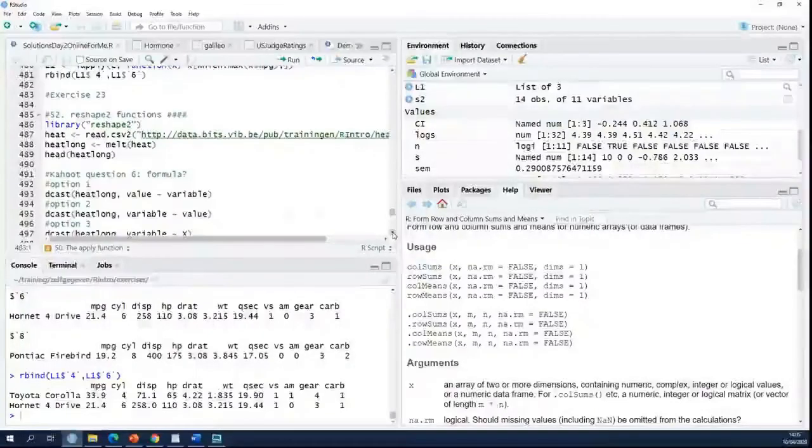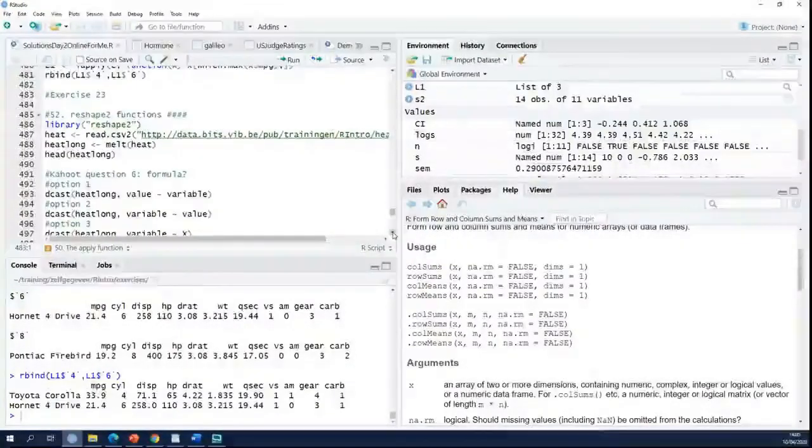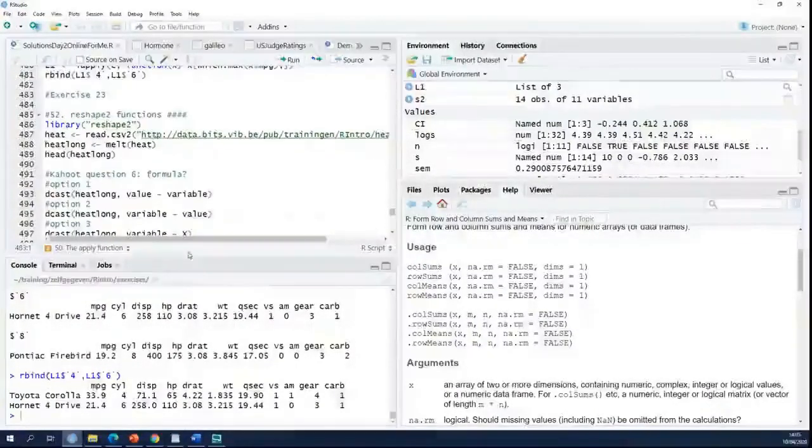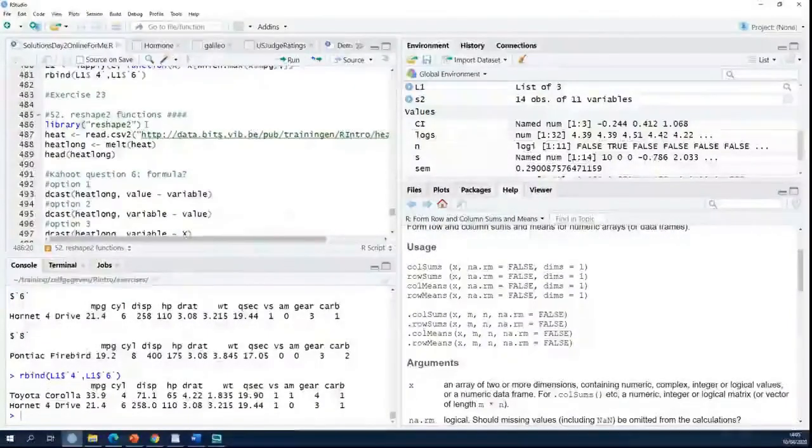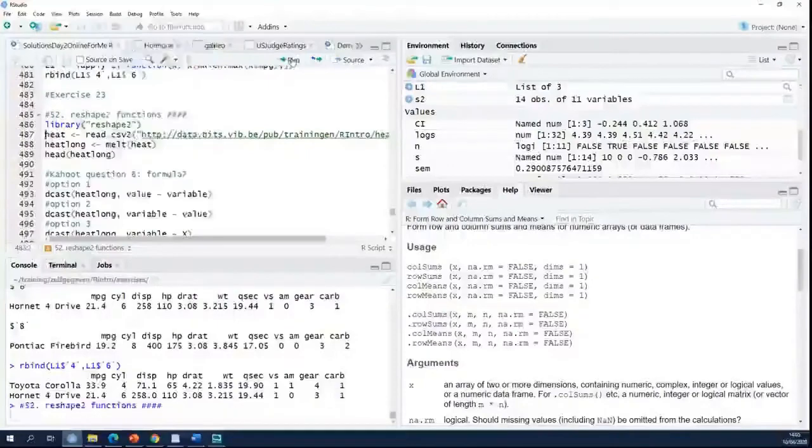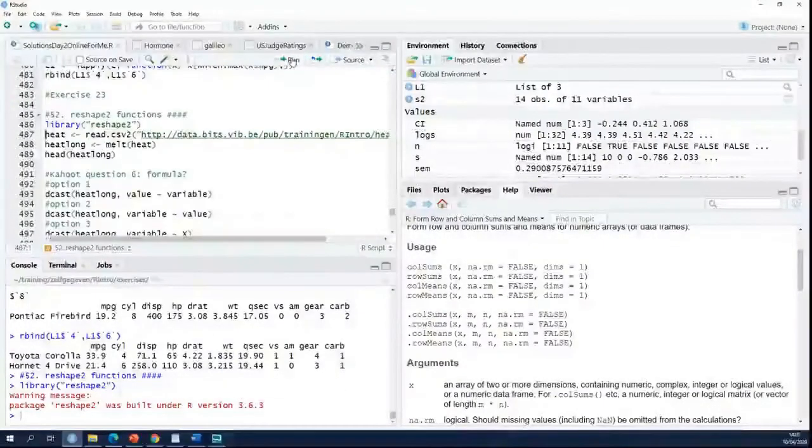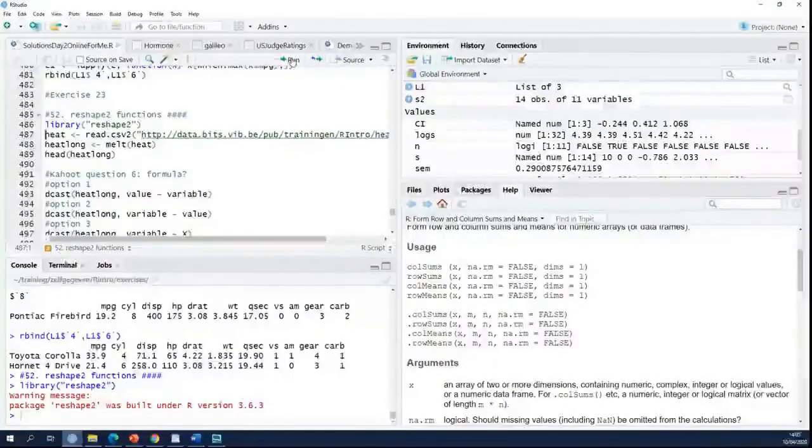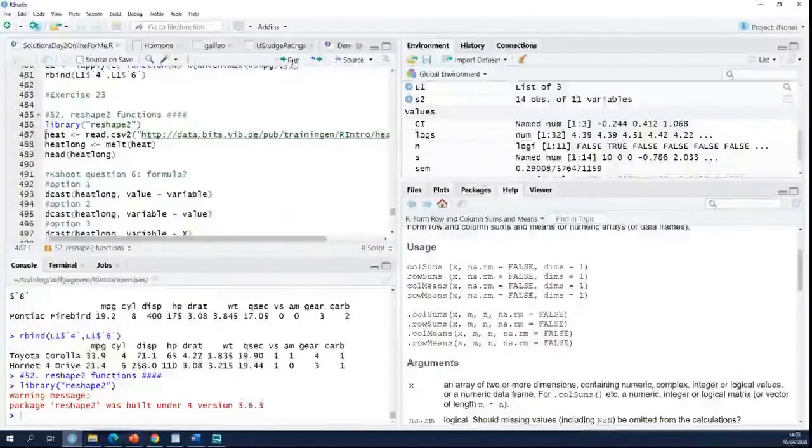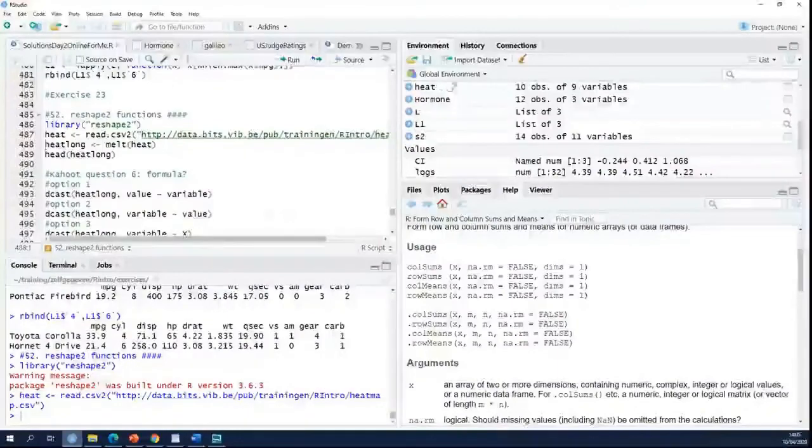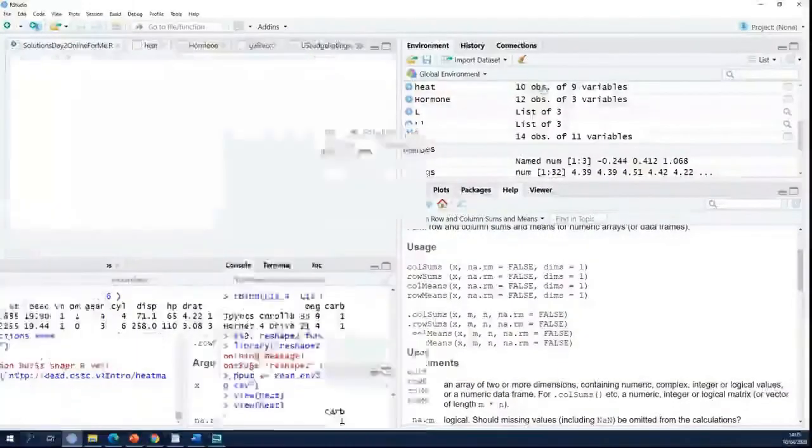So this is again an external package so you have to install it and before you can use it you have to load it. This is why we do here library reshape2. It loads the reshape package. I read in a data set. It's available online. So what is this data set about?